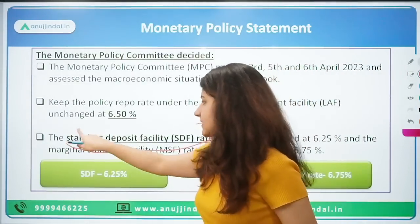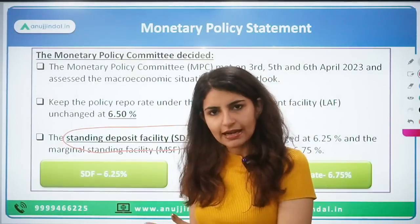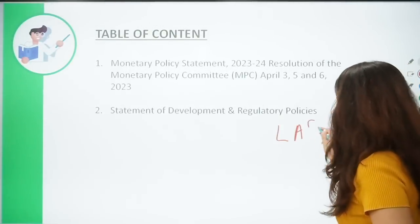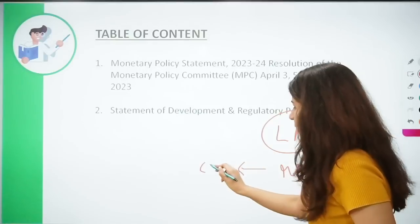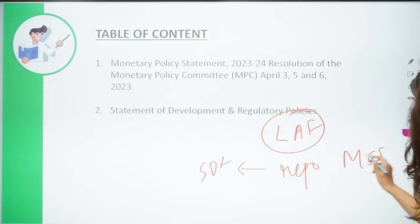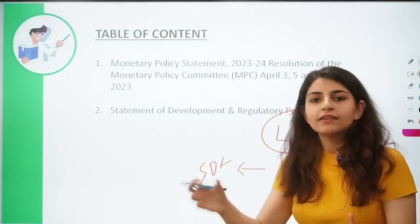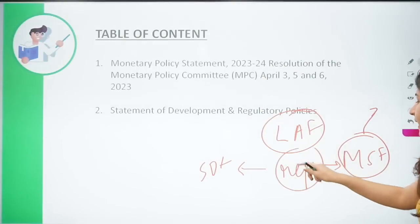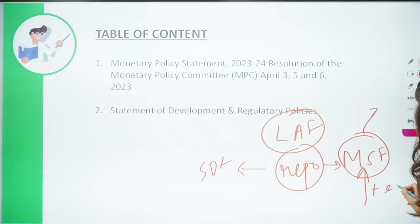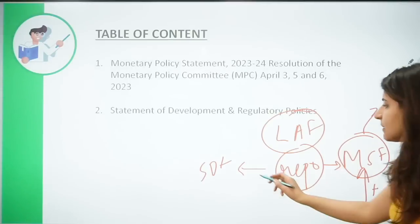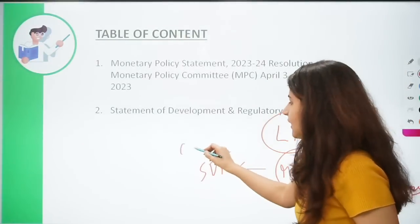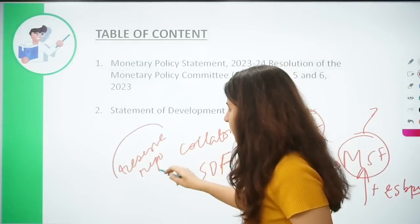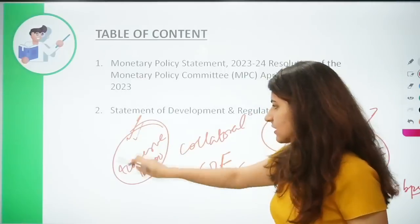Now, what will be the SDF — Standing Deposit Facility? The LAF, that is the Liquidity Adjustment Framework corridor, stands like this: Repo in the middle, SDF below, and MSF above. MSF is for emergency funds when interbank liquidity has dried up — banks resort to the MSF, which is 25 basis points more than the repo rate. In SDF, there is no collateral; it works like reverse repo rate, but banks parking money with RBI do not receive any collateral in return.